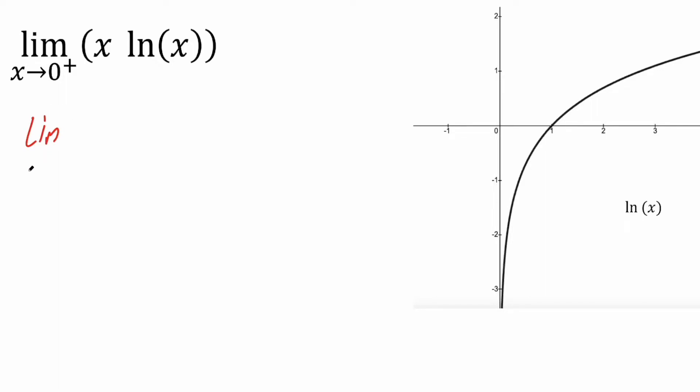So we have the limit as x approaches zero to the right. Instead of writing it like this, we could say we have ln(x) divided by one over x. And this form right here is equivalent to this form, because we're not dividing by x, we're dividing by one over x, which will match with this form.